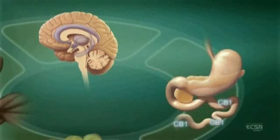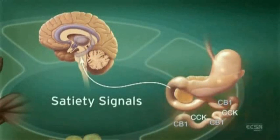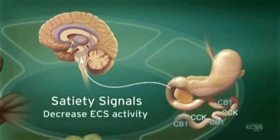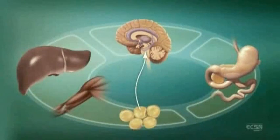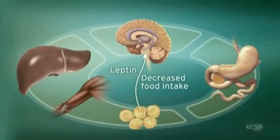After eating, cholecystokinin in the duodenum triggers satiety signals. Subsequently, ECS activity is decreased through suppression of CB1 expression. An increase in the adiposity hormone leptin decreases endocannabinoid levels in the hypothalamus and decreases food intake.